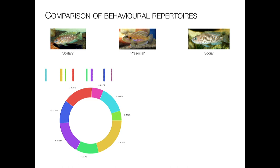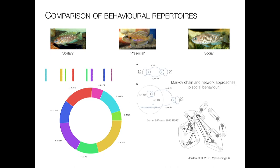One thing you can do is create behavioral repertoires based on kinematics alone, but these are social animals living in collectives, so the subsequent step we're incorporating is not only including individual-level characteristics, but also Markov chain approaches. This is a paper by Jens Krauser looking at the probability of a behavioral shift, and then embedding those in natural social networks to ask not just what the animal is doing, but how does what the animal is doing affect what the other animals around it are doing?